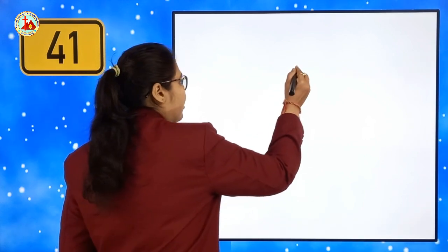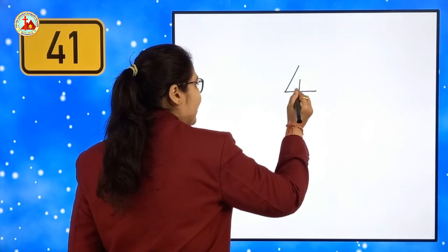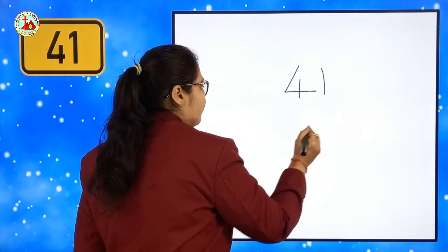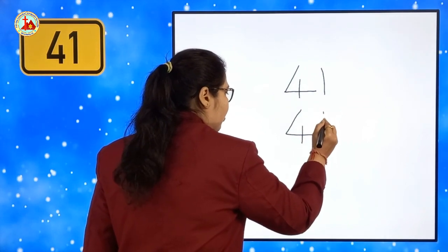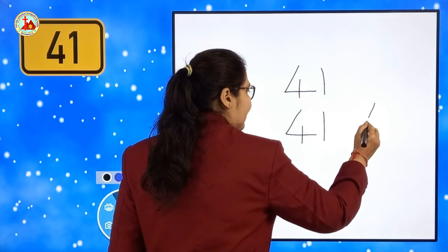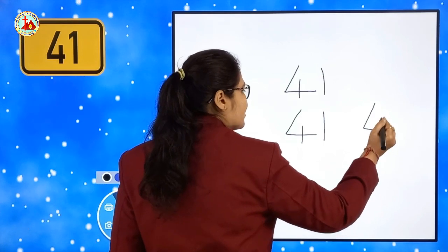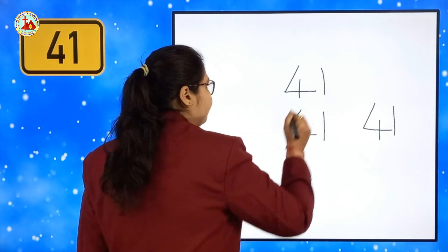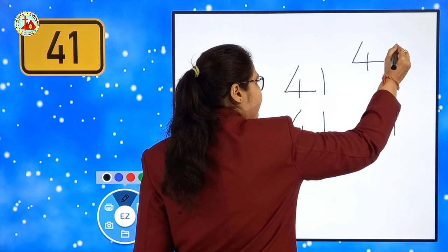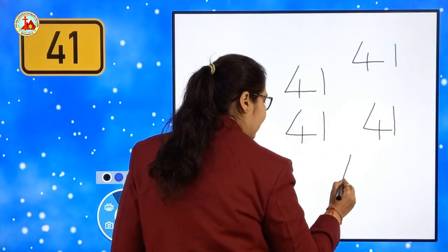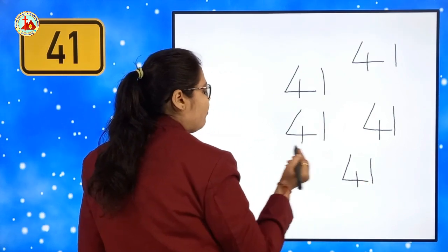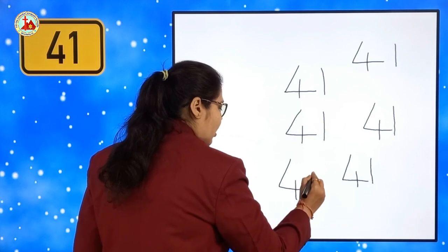For writing number 41, first which number do we have to write? Number 4. Slanting line, sleeping line, standing line makes number 4. Then you have to write number 1. Upward to downward makes number 1. Again: 41. Slanting line, sleeping line, standing line makes number 4. Then number 1. 41, 41.